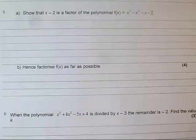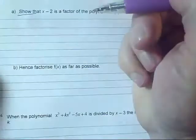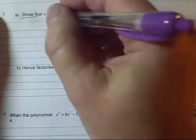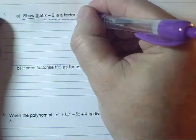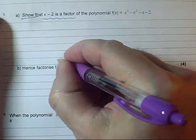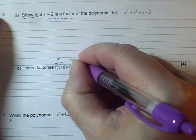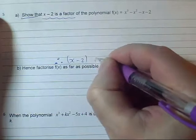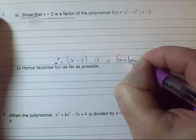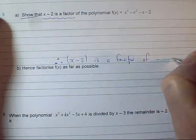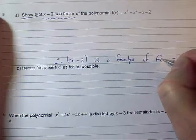Okay, question five. It's a show that question. So at the end we're going to have to draw the conclusion. I can write down to begin with: therefore x minus two is a factor of f of x. That's all I need to write there.